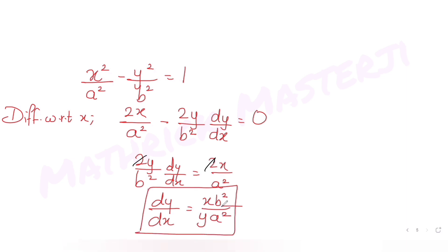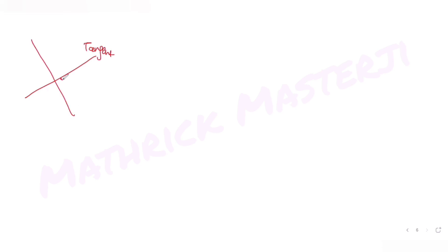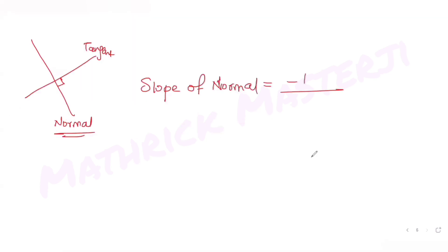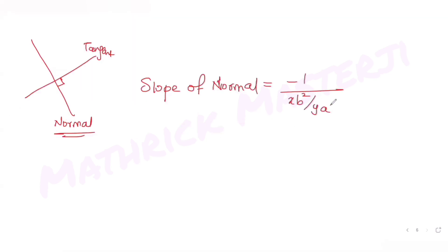Since the normal is perpendicular to the tangent, the slope of the normal is the negative reciprocal: slope of normal = -1 / (dy/dx) = -(y·a²)/(x·b²).